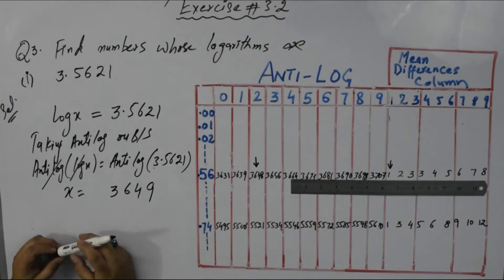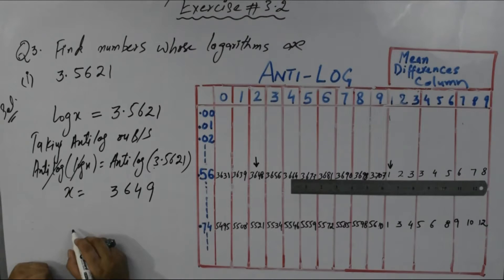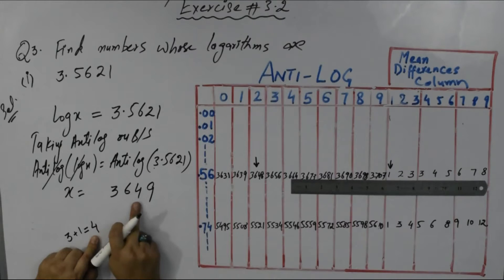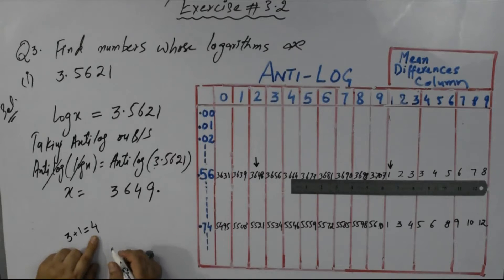Now come to its characteristic. Characteristic shows where we have to put decimal. If you have positive characteristic - I have positive 3 - whenever characteristic is positive add plus one, so it becomes four. Four shows number of digits before decimal: one, two, three, four, then decimal here.